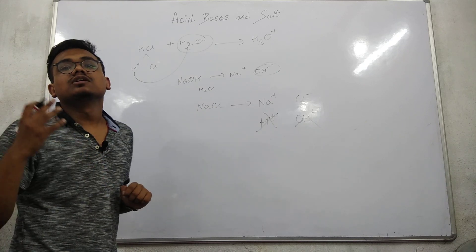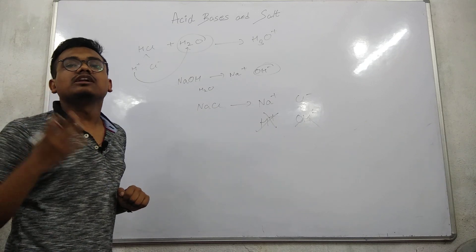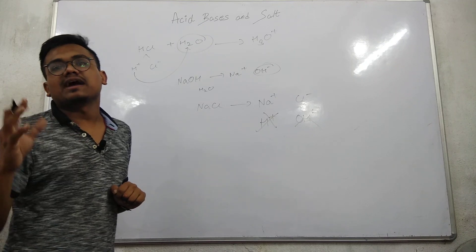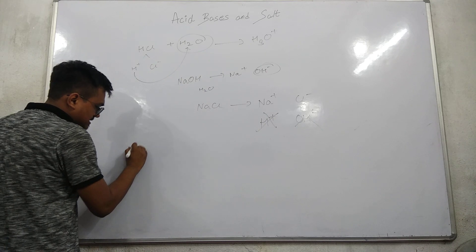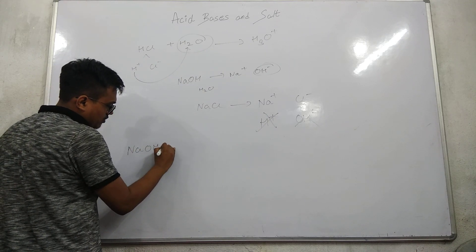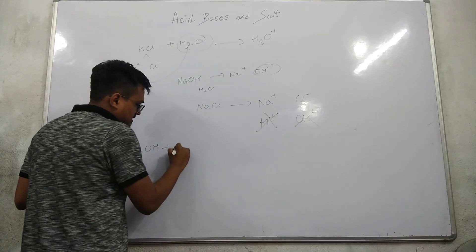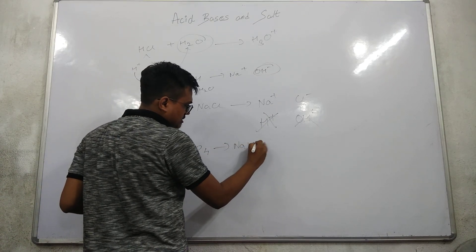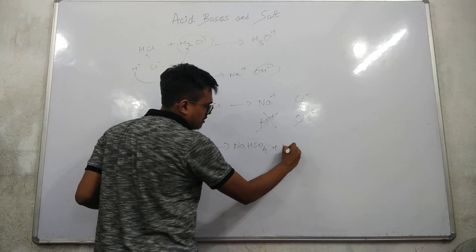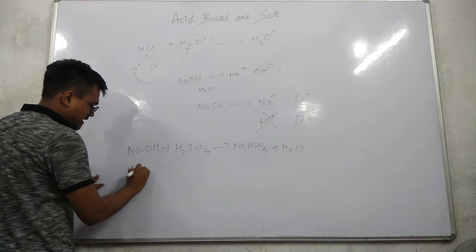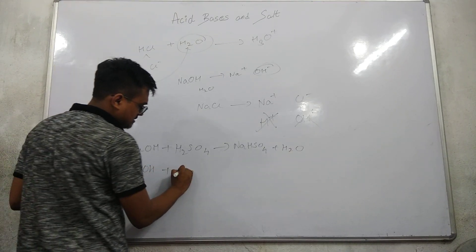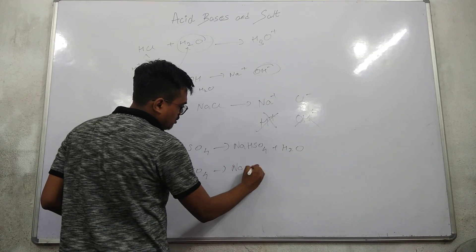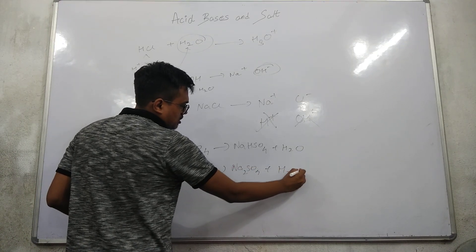For example, NaOH + H2SO4 gives NaHSO4 + water (partial replacement). We can also write 2 NaOH + H2SO4, which gives Na2SO4 + water (complete replacement).